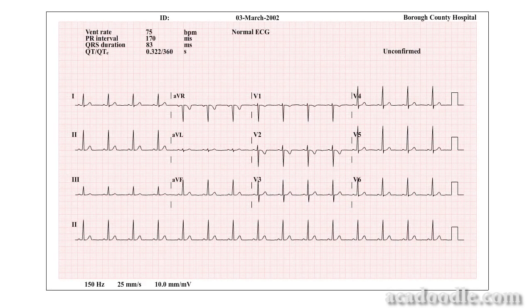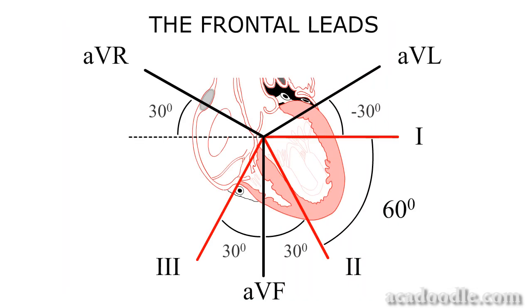On the ECG readout, recordings from the augmented vector leads are positioned between the standard leads and the chest leads, from AVR to AVL and down to AVF at the foot of the page. The lead perspectives and angles illustrated in this diagram will become very important to us when we go on to discuss disease states and the concept of the cardiac axis in section 2.